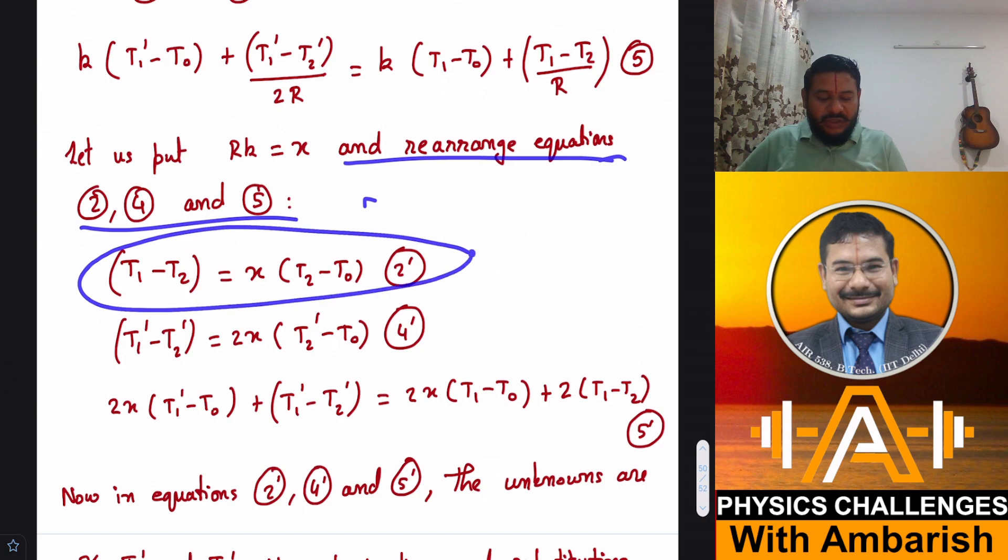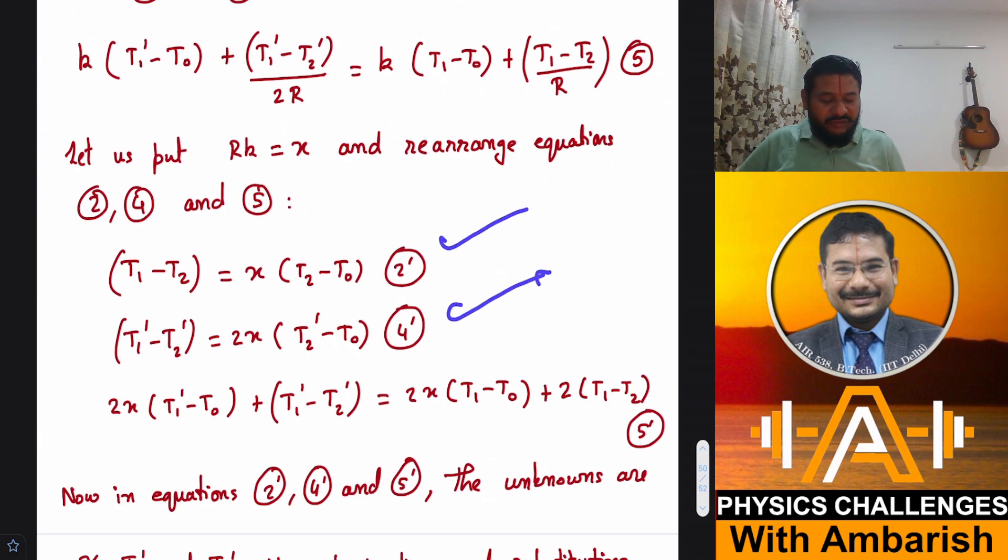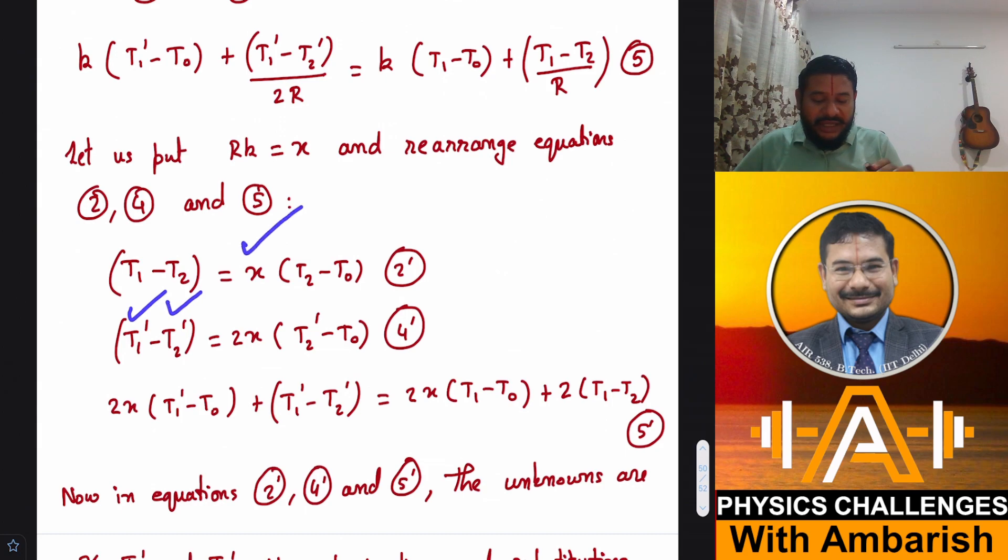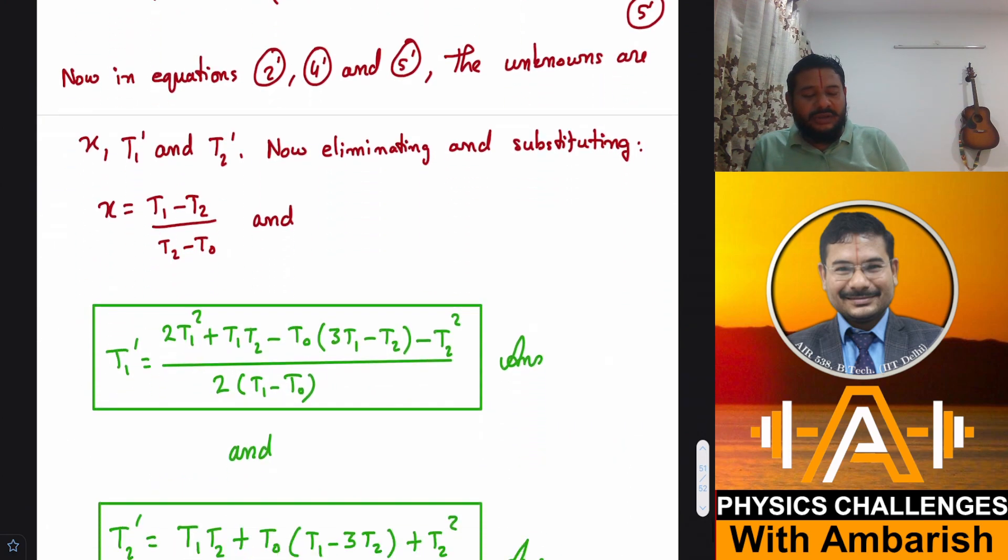So let's put RK as X and rearrange the equations. So wherever I'm getting an RK product, I'm writing that as X. If you look at these three equations, what are the unknowns? The unknowns are T1 prime, T2 prime and X. There are three unknowns and we have three equations. So now it's a simple matter of elimination and substitution to solve for T1 prime and T2 prime.